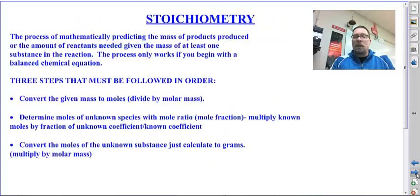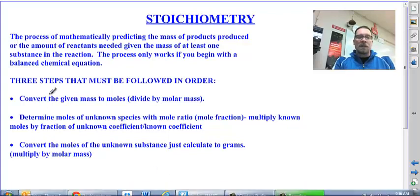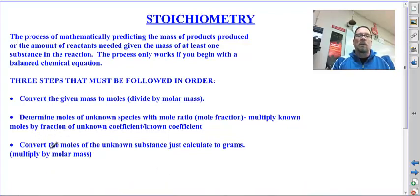The steps that we use, and here I have kind of the definition and the steps we use. This is the three steps that are always followed once you start with a balanced chemical equation. And that is changing the given mass you have. And that's the key to it. You just have to have one. One mass of anything in that reaction and you can calculate everything else.